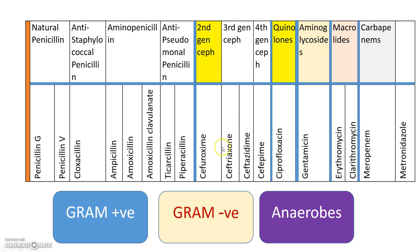Third-generation cephalosporins include ceftriaxone and ceftazidime. Fourth-generation cephalosporins include cefepime. We also have the quinolones, with ciprofloxacin as a key example. Aminoglycosides such as gentamicin, macrolides such as erythromycin and clarithromycin, and the carbapenems such as meropenem. We also have metronidazole. This is an overview of the commonly used antibiotics.